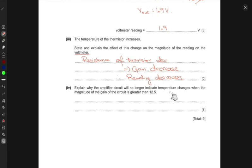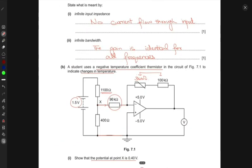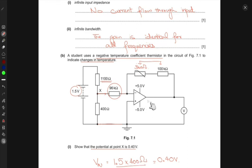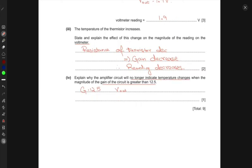Next, explain why the amplifier circuit will no longer indicate temperature changes when the magnitude of the gain is greater than 12.5. When the gain is at 12.5, V_out would be 5 volts. If the gain goes higher than 12.5, the output becomes saturated at 5 volts. This means it will no longer indicate any temperature change because the output has reached its maximum and will not change anymore.